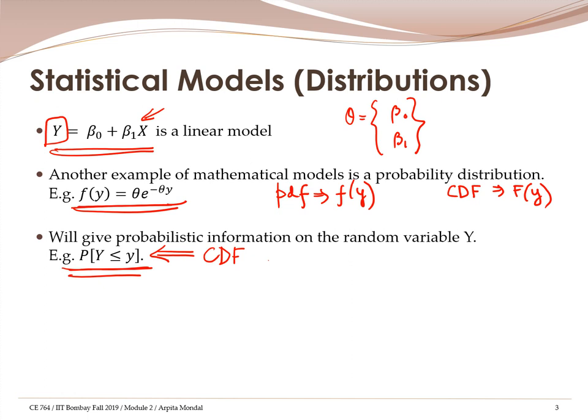Once you know the probability of y being less than or equal to 0, you can also calculate the probability of y being greater than or equal to 0. Similarly, you can calculate the probabilities of y lying between two constants a and b. Essentially, theta characterizes the distribution, and if we know theta, we know everything about that distribution.